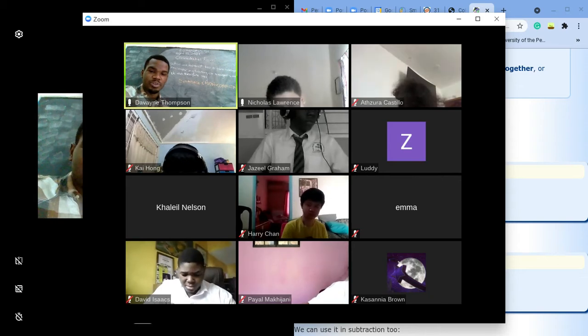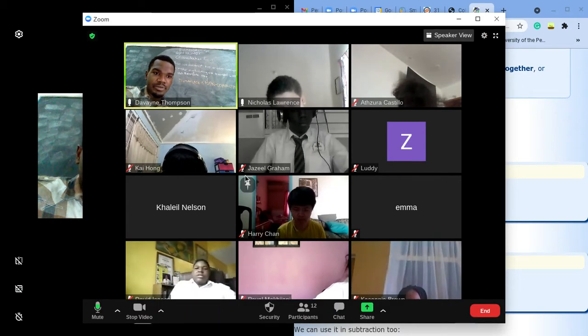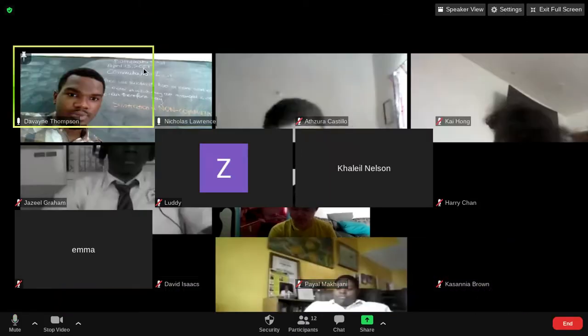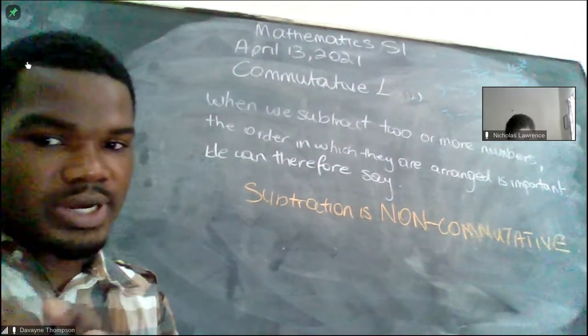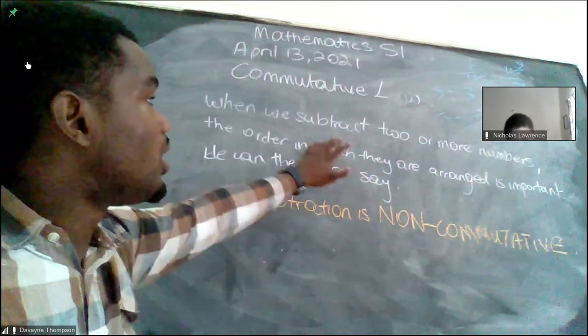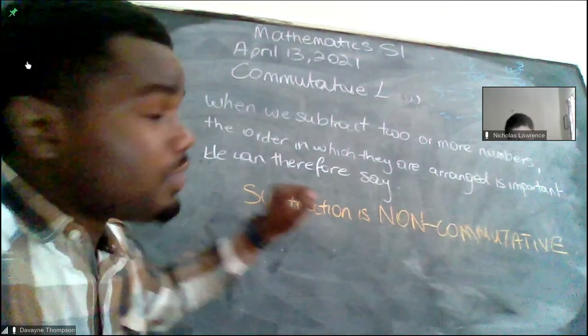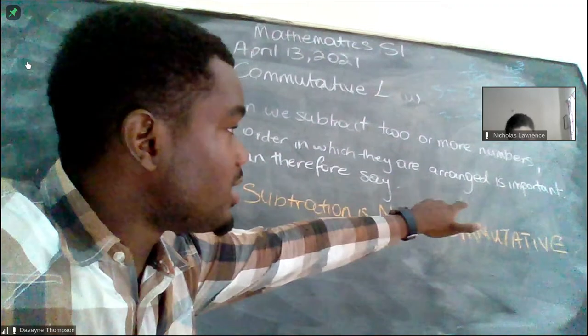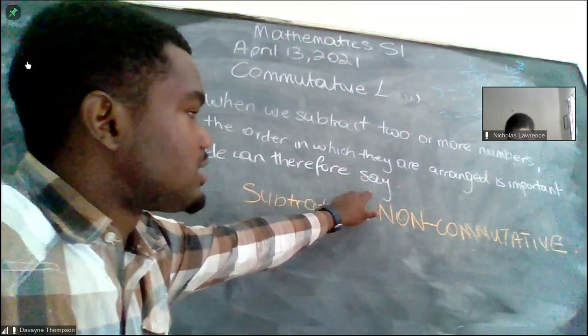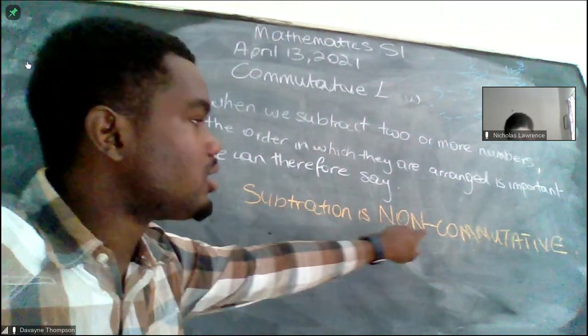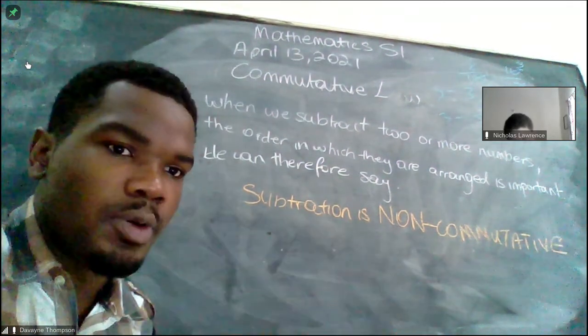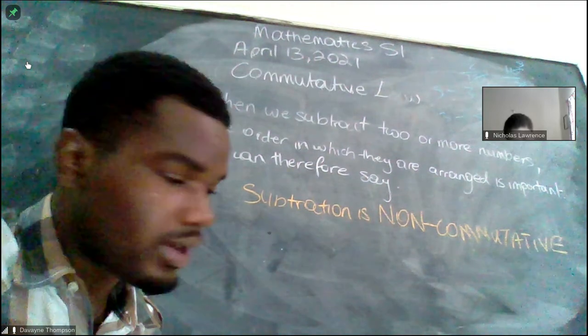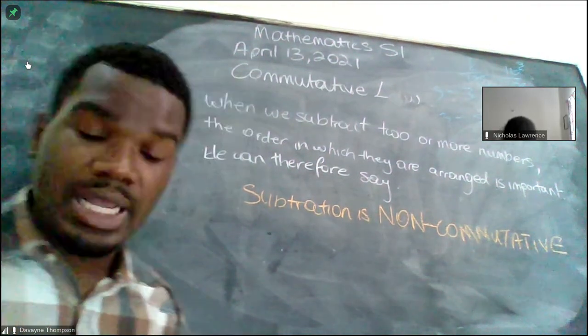This is something you've noticed all along but you just haven't paid attention to. Next thing we're going to look at: when we subtract two or more numbers, the order in which they are arranged is important. We can therefore say subtraction is non-commutative, because commutative said you could arrange in any way and it didn't matter.